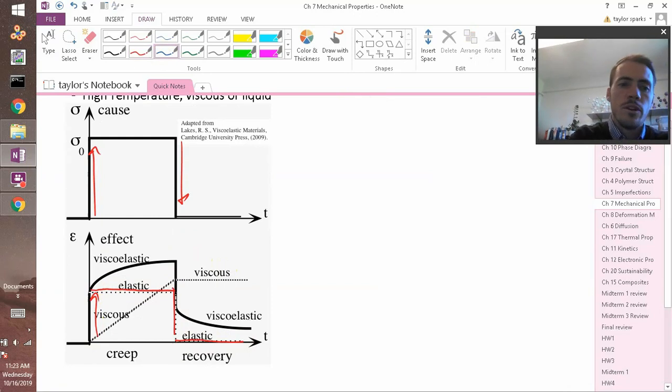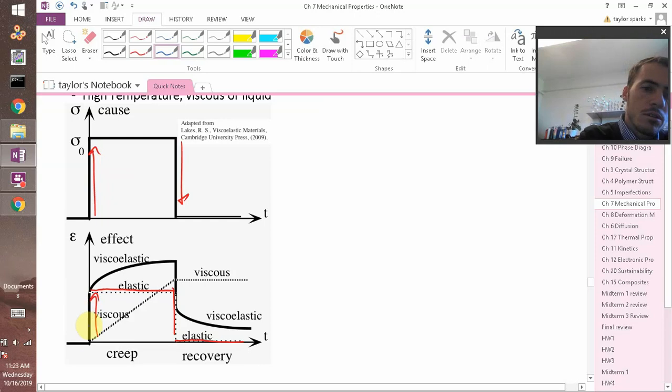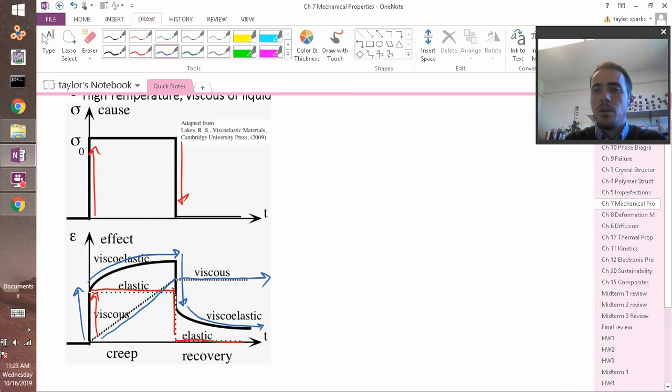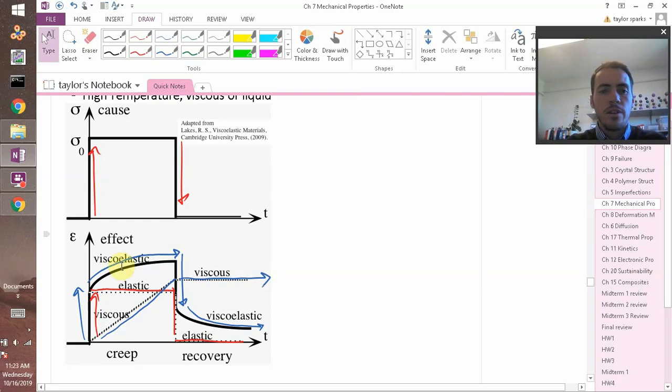But viscoelastic materials don't behave that way. They behave in a sort of funny way. There's an initial strain, but then it sort of keeps on rising. As long as that stress is present, it keeps on stretching. And then when you kill it, it drops a little bit, but it doesn't drop down to zero. Instead, it sort of decays back to some value. That's viscoelastic behavior. Compare that to viscous, where as long as the stress is applied, it just keeps on straining. And then as soon as it's gone, it just stays there. That would be viscous. So viscoelastic lies somewhere between viscous behavior and elastic behavior.